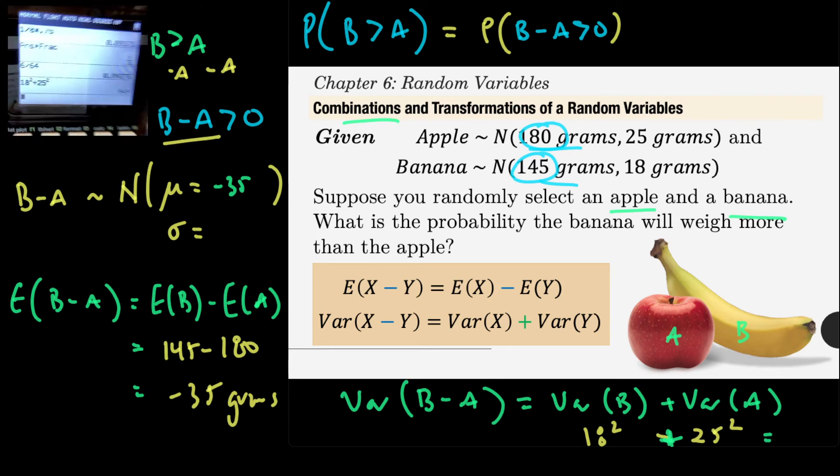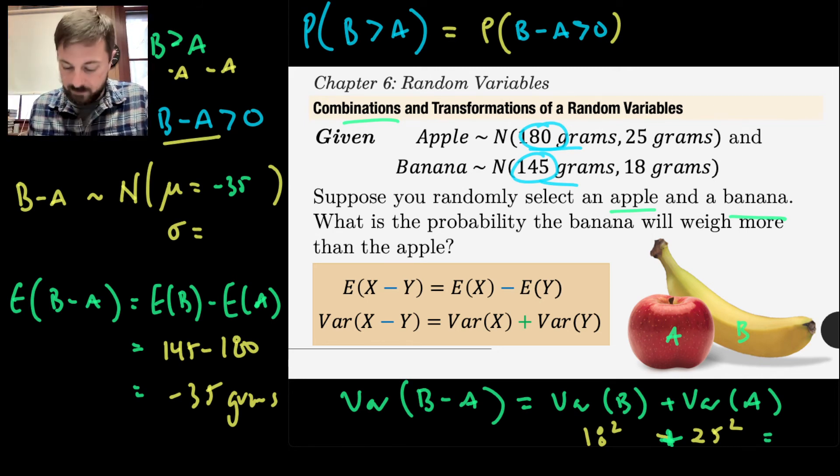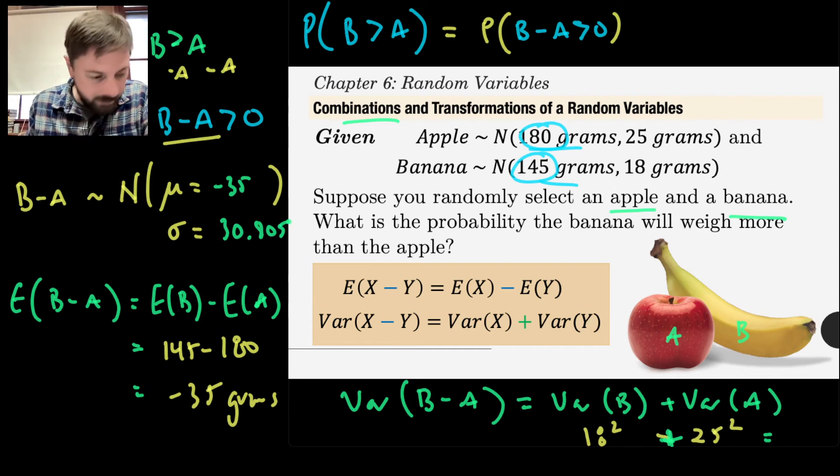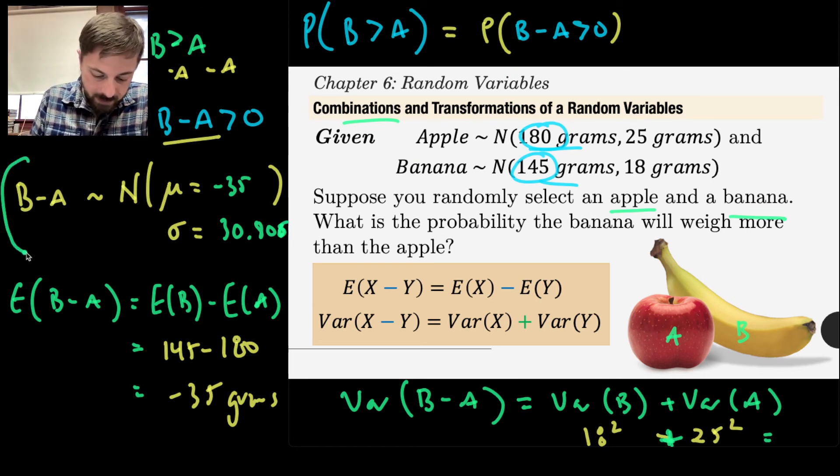And so then all I'll do is take the square root of 949. The square root of the variance is the standard deviation. And I get a standard deviation of 30 point, say 805 or so. Actually 806 if we rounded correctly. So 30 point 806. Now, boom, I can calculate the probability that B minus A is greater than zero simply by using this distribution right here.